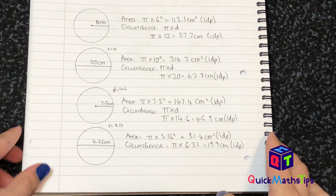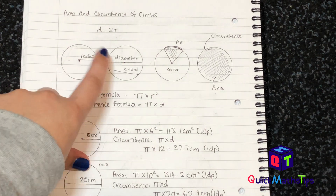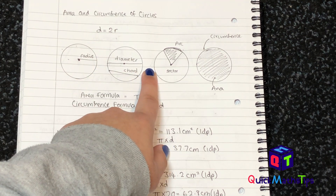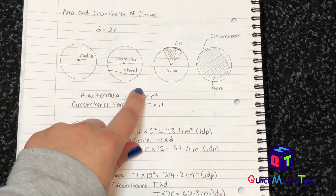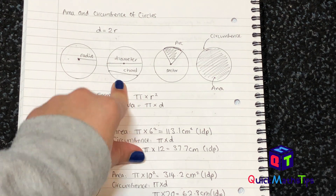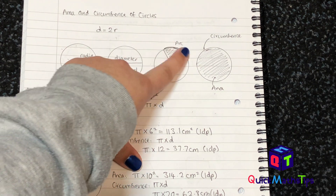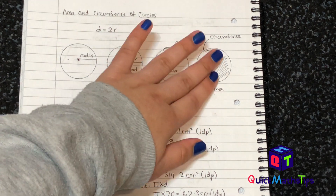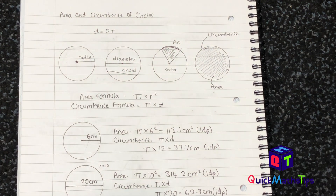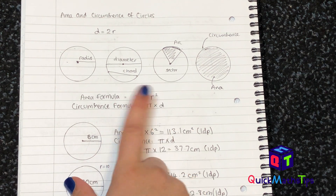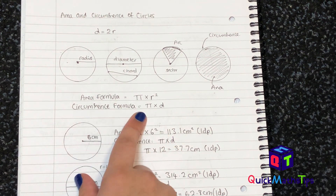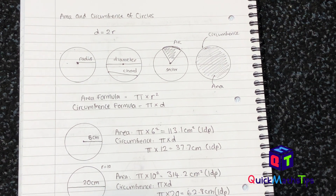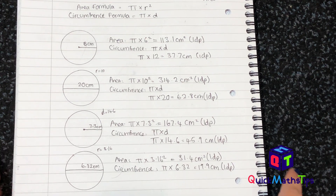So remember: from the center to the edge is called the radius. A line that goes from one end of the circle to the other and passes through the center is the diameter. If it doesn't pass through the center, it's a chord. A pizza slice is a sector, the crust of a pizza slice is an arc, and the crust of the whole pizza is the circumference. The shaded bit is the area of a circle. Area formula: pi times r squared. Circumference formula: pi multiplied by diameter. Remember, your diameter is double your radius. Practice some questions and you'll get the hang of the formulas.